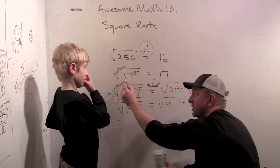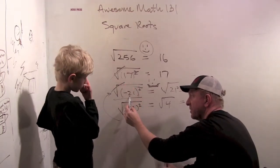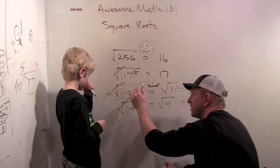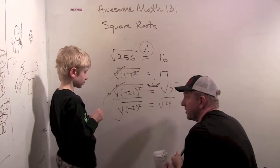This number is already positive. This number is negative but it becomes positive when you square it. So you can't just cancel the square roots and the squares.